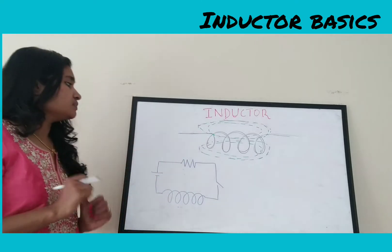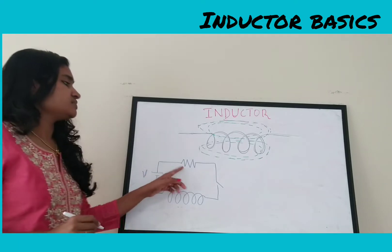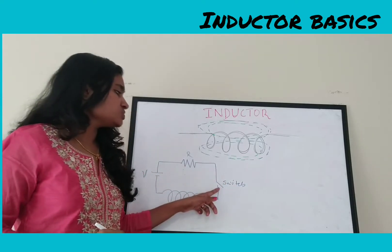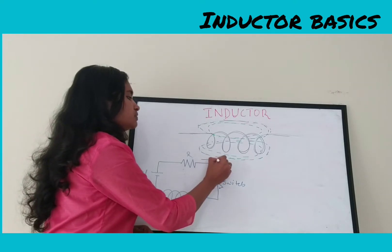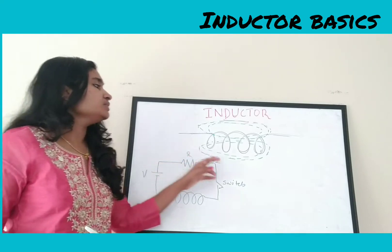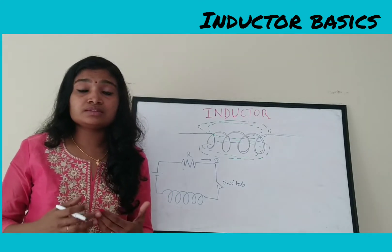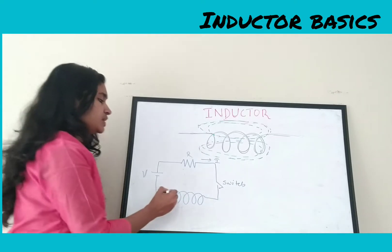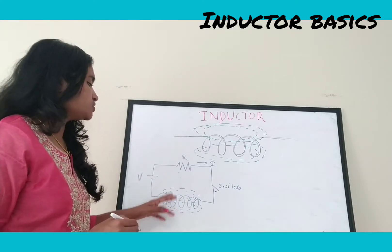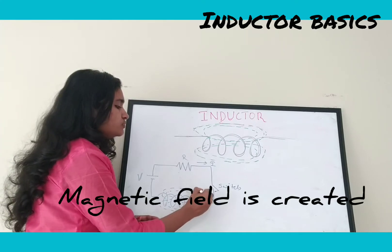Let's consider a circuit consisting of an inductor. There is a battery with voltage V, a resistor, a switch, and an inductor. When the switch is closed, current flows through this network. This current passes through the coil or inductor, and when the current flowing through the inductor varies with time, a magnetic field is generated around the coil.